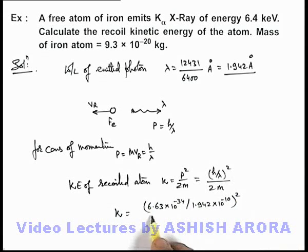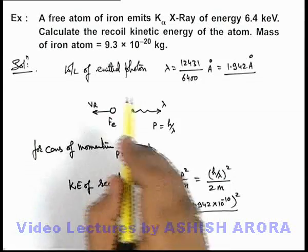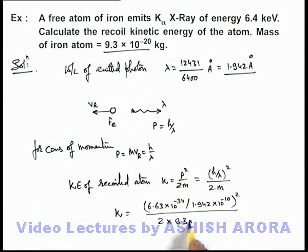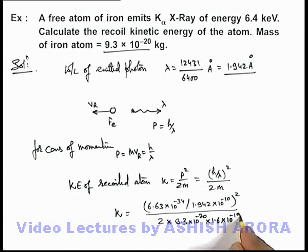Square of this we take, divided by twice the mass of the iron atom, we can use as 9.3 into 10 to the power minus 20 kilograms. So this will be the total energy given in joules. To convert it into electron volts, we divide by 1.6 into 10 to the power minus 19, so this will be in electron volts.